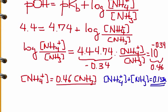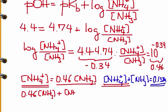Now we have two equations and two unknowns. I can substitute NH4+ with 0.46[NH3] in the total concentration equation: 0.46[NH3] + [NH3] = 0.15. That's 1.46[NH3] = 0.15.